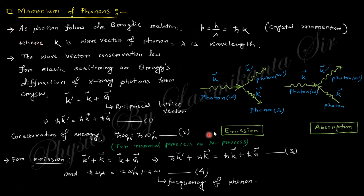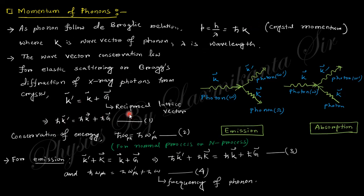Phonons and photons are interrelated via the momentum concept. From the de Broglie hypothesis, linear momentum is h divided by lambda, which equals h-bar times k, where h-bar is h over 2-pi and k is the wave vector. From conservation of momentum, when there is no phonon involved — the elastic collision case — we write: k-prime equals k plus G, where G is the reciprocal lattice vector. Multiplying by h-bar gives momentum conservation. This is known as the normal process or N-process.